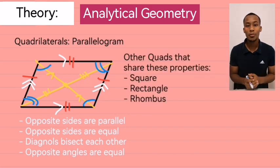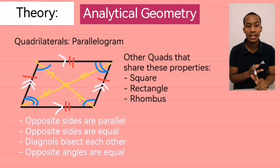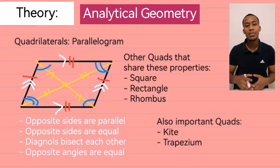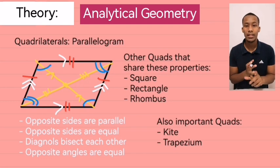Now, a parallelogram shares its properties with a square, a rectangle, and a rhombus. Also, other noteworthy quads are quads such as a kite and a trapezium. Those are also very relevant and important to know.